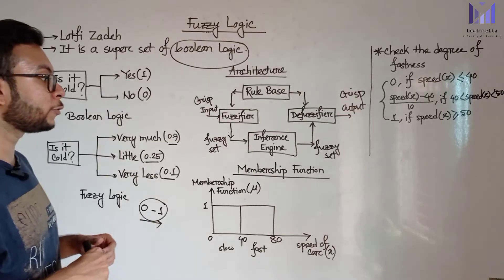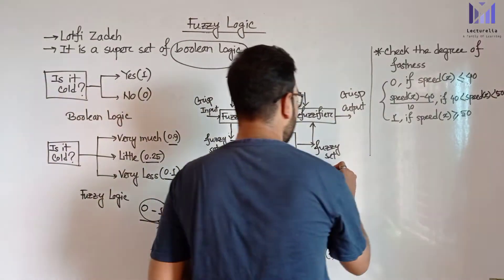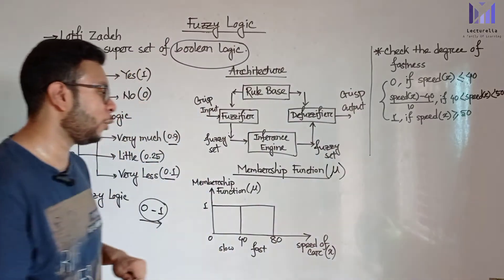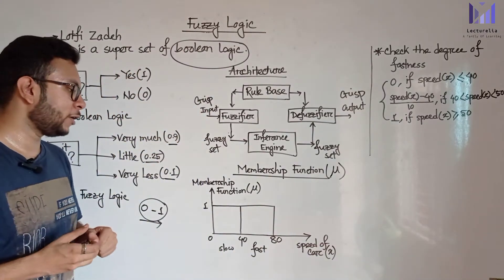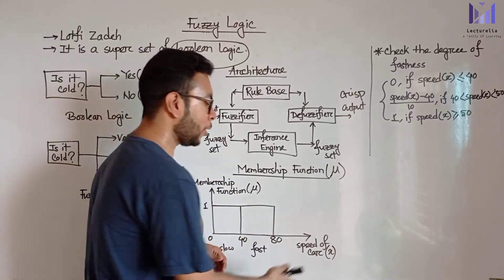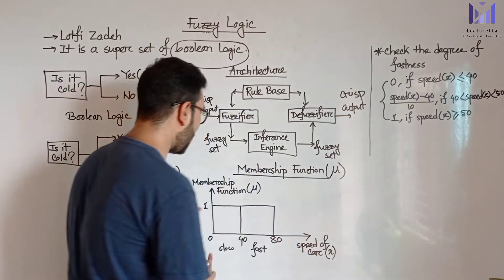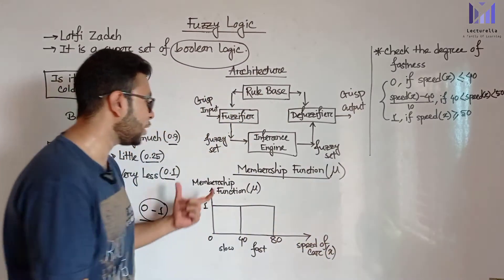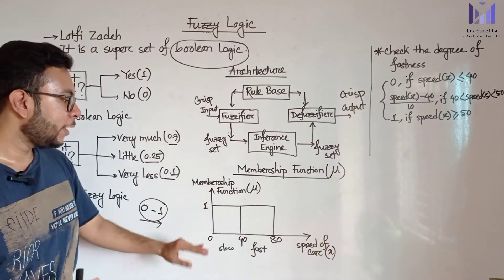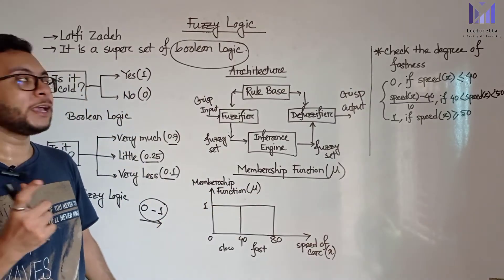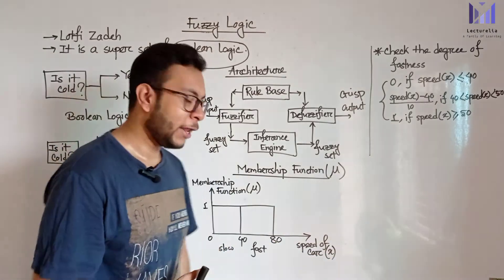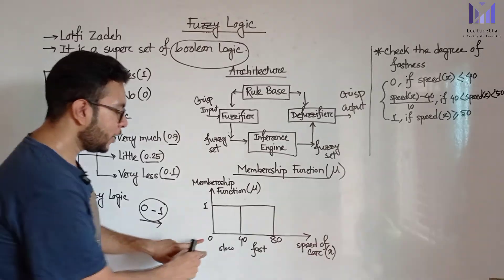Now one of the most important topics in fuzzy logic is the membership function. The universe of discourse covers all values along the X axis. The membership function maps input values to membership degrees. For example, consider the speed of a car.